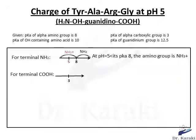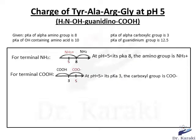For the terminal COOH, we draw an axis. On the middle of it we put the pKa of the carboxyl group, which is 3. On the left side we have the protonated form COOH, and on the right side we have the unprotonated form, carboxylate COO-. Since 5 is higher than 3, the carboxyl is COO-.